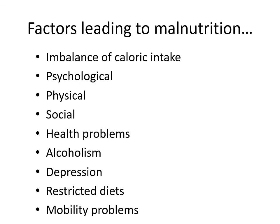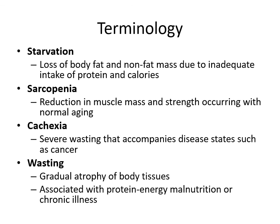Factors leading to malnutrition include an imbalance of caloric intake, psychological factors, physical and social factors, health problems, alcoholism, depression, restricted diets, and mobility problems. Additional terminology: starvation is a loss of body fat and non-fat mass due to inadequate intake of protein and calories; sarcopenia is age-related reduction in muscle mass and strength; cachexia is severe wasting accompanying disease states such as cancer; and wasting is gradual atrophy of body tissues associated with protein-energy malnutrition or chronic illness.